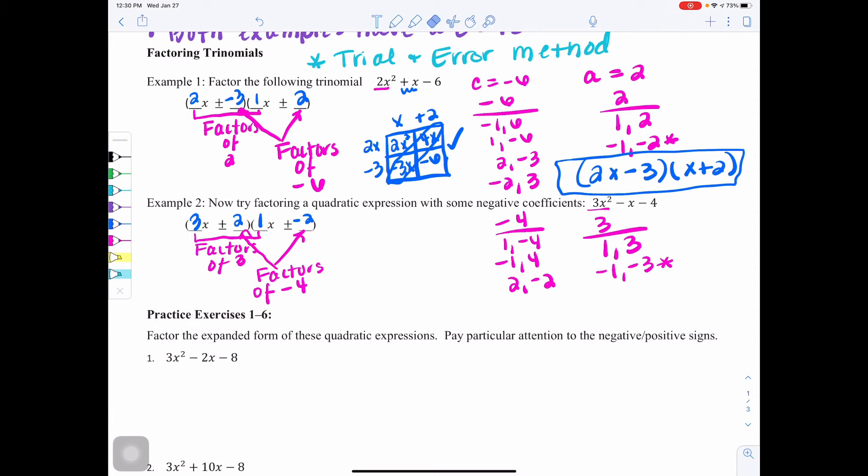If I were to switch them, I could do negative 2 here and positive 2 here. I'd get 3x squared. 3x times 2 would be positive 6x. Negative 2 times x would be negative 2x. And when I combine them, I'd get a 4x. So I can see with my twos, I'm not getting the combination that I need. So now I'll try a different pair.